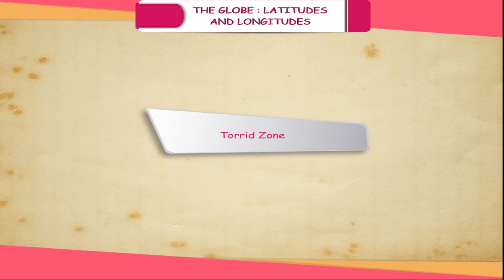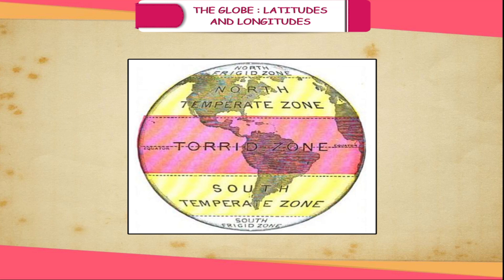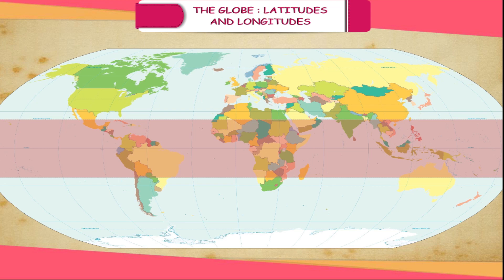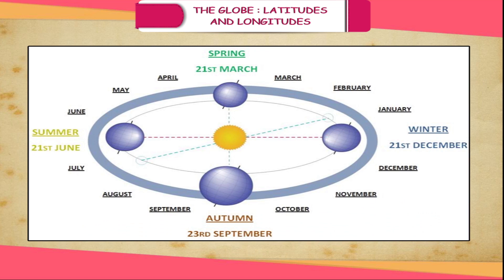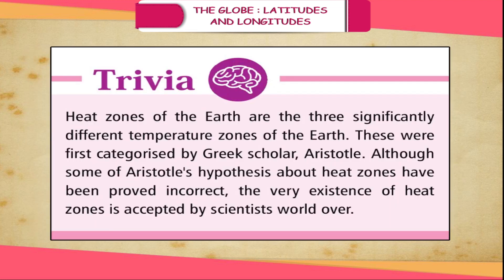The Torrid Zone lies between the Tropic of Cancer and the Tropic of Capricorn. This zone experiences high temperature throughout the year because the rays of the sun fall vertically on this region, making it extremely hot. Most of India lies in this zone. The sun's rays fall vertically on the Tropic of Cancer on 21st June, making it the longest day in the year; similarly, 22nd December experiences the longest night. Trivia: Heat zones were first categorized by Greek scholar Aristotle, and though some of his hypotheses have been proven incorrect, the existence of heat zones is accepted by scientists worldwide.